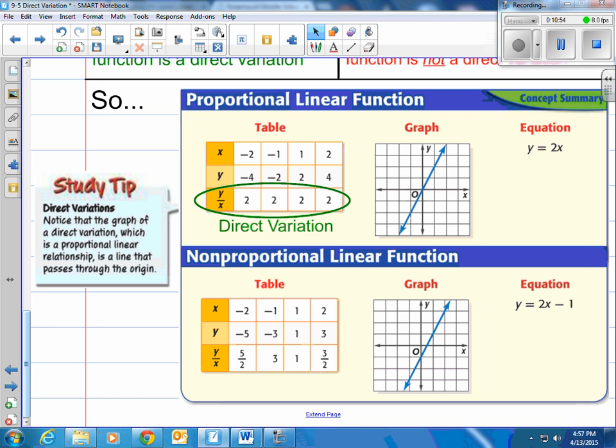Also, you'll see here when we take y divided by x, we have the same value. When we do it on a non-proportional, when we divide those y divided by x, we do not have the same value. So again, direct variations are proportional, and non-proportional linear relationships are not direct variations.